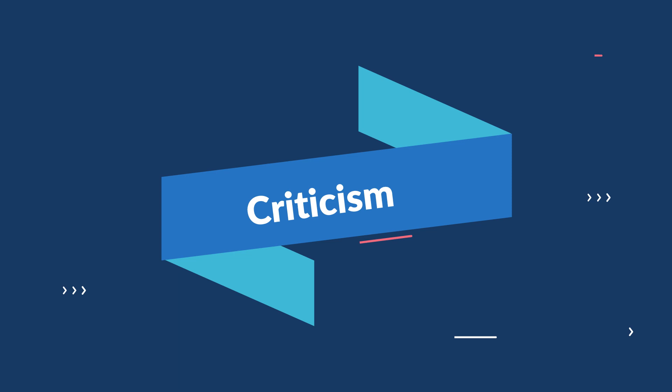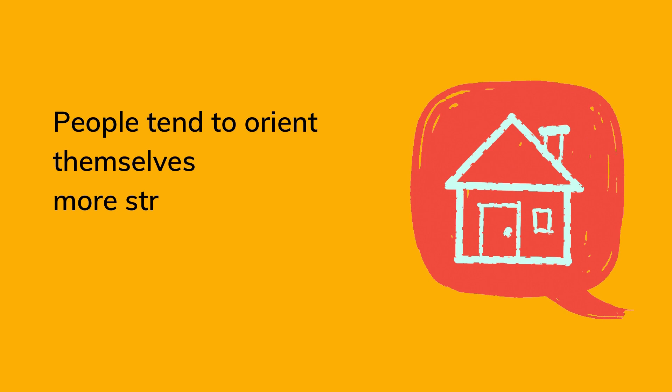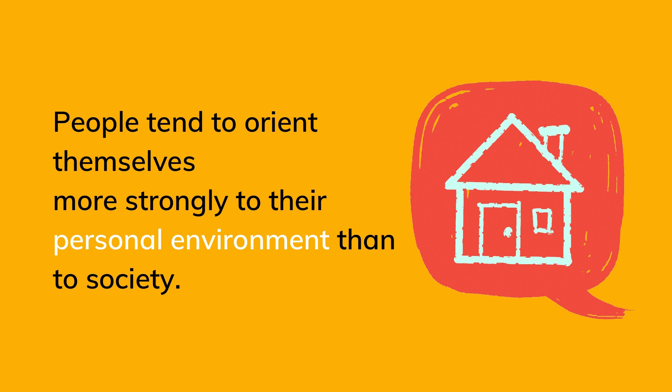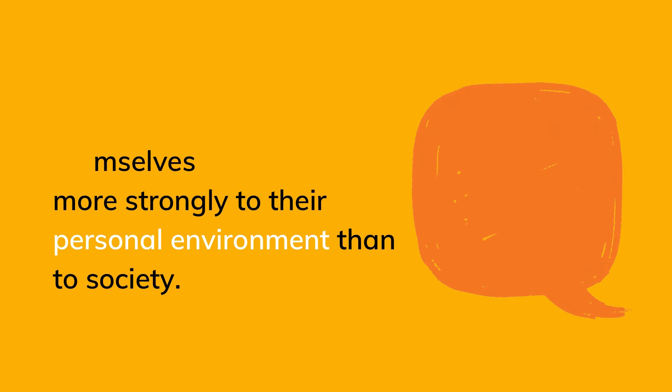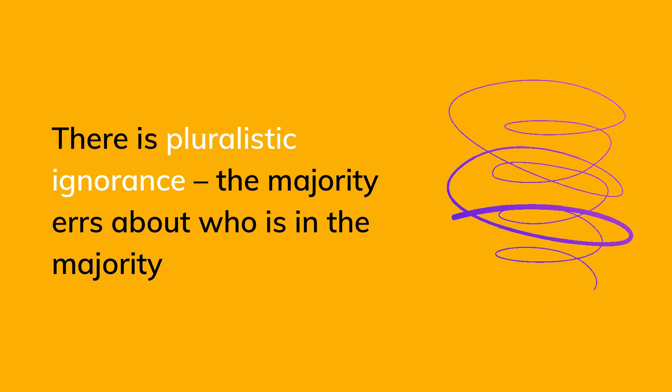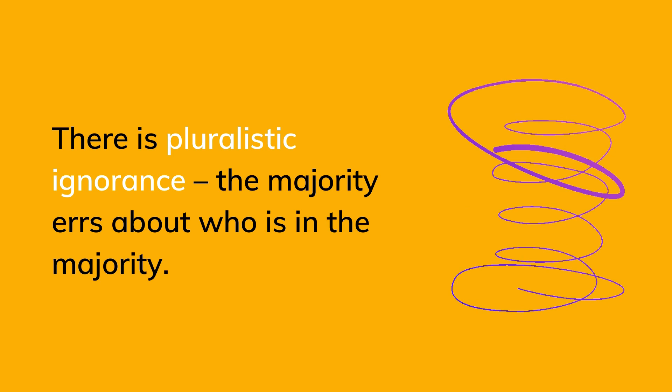Over the years, media and communication scholars have criticized the Spiral of Silence model on many counts. First, it has been argued that people tend to orient themselves more strongly to their personal networks and immediate environment rather than to society at large. Second, the theory does not consider the possibility of pluralistic ignorance — where the majority does not know who is in the majority — so the idea of finding the majority viewpoint may not always be correct.